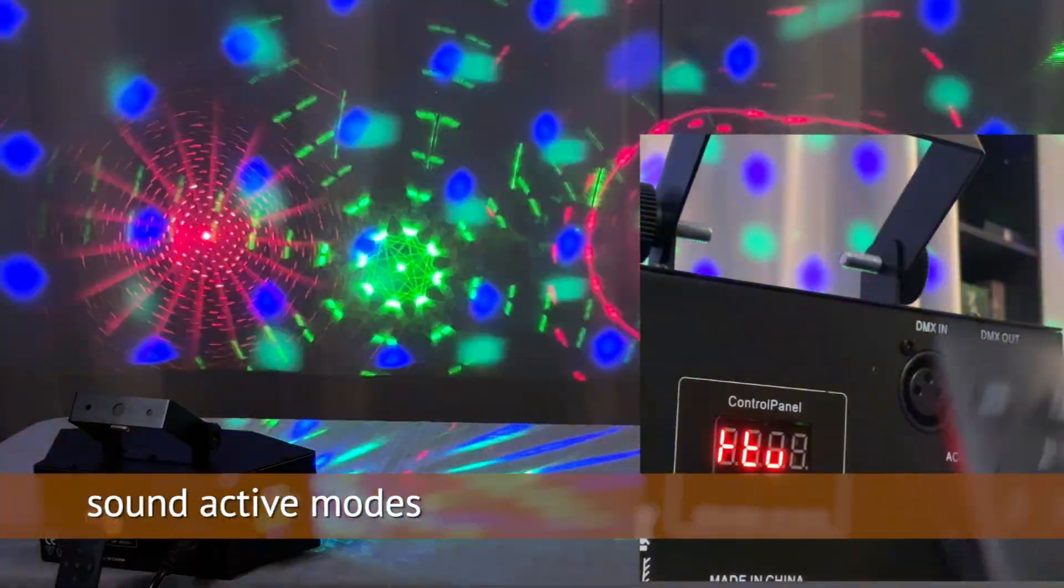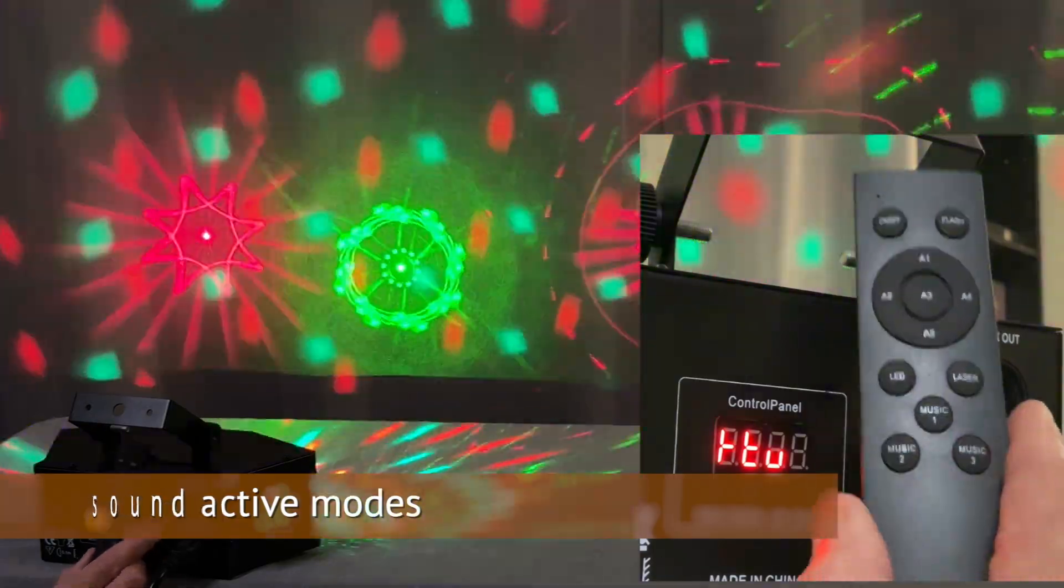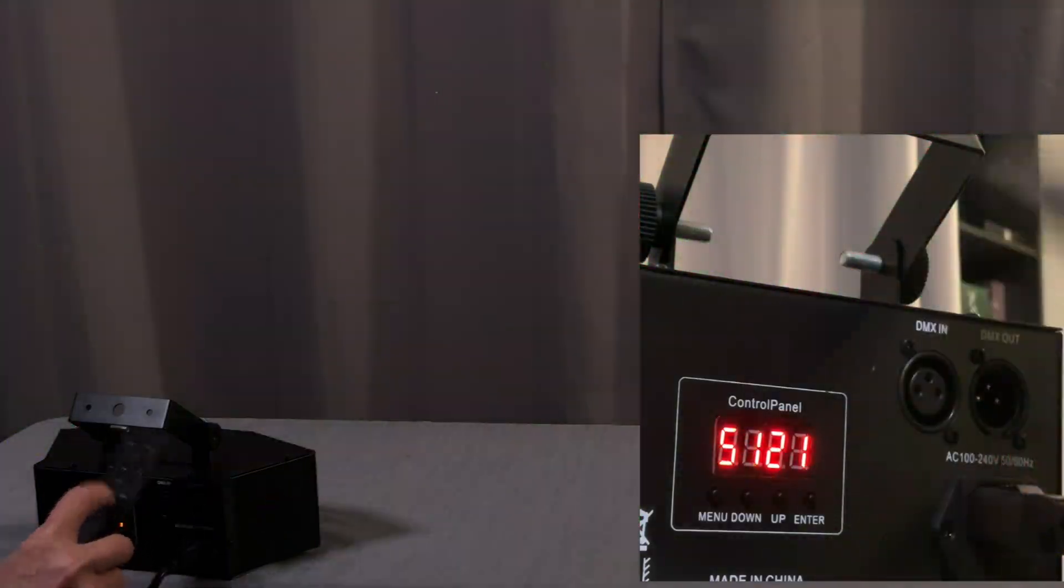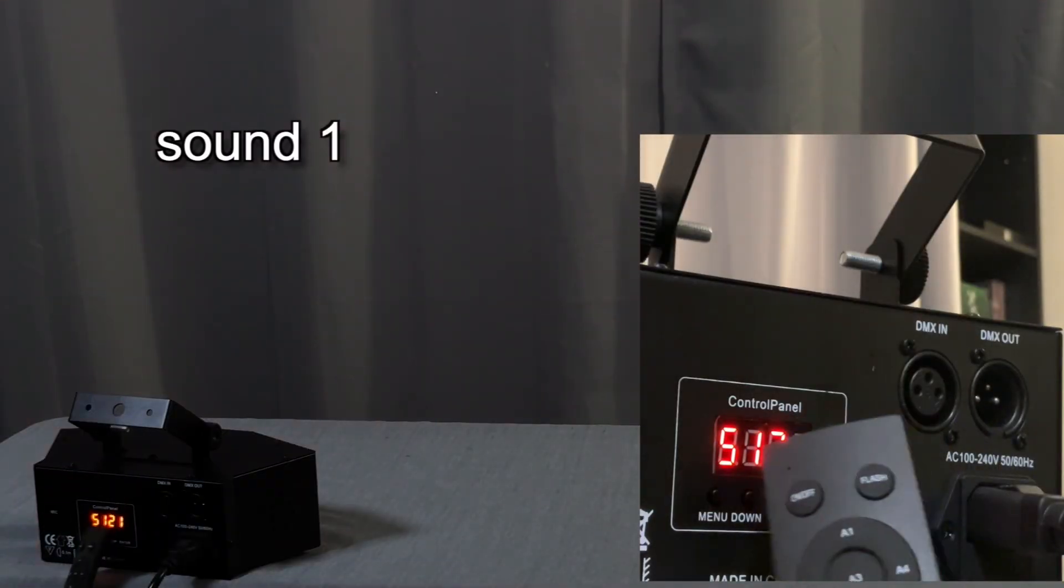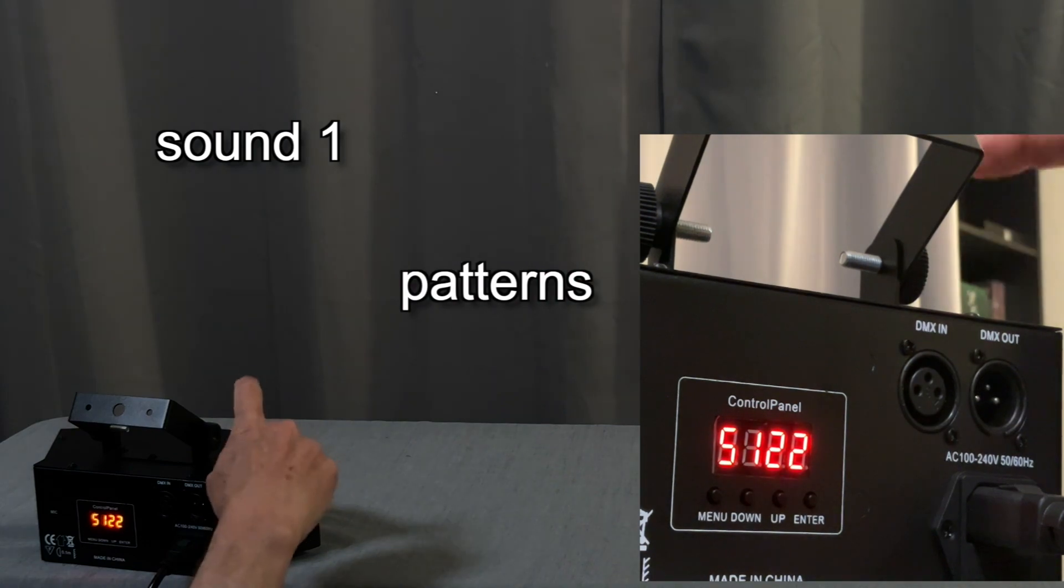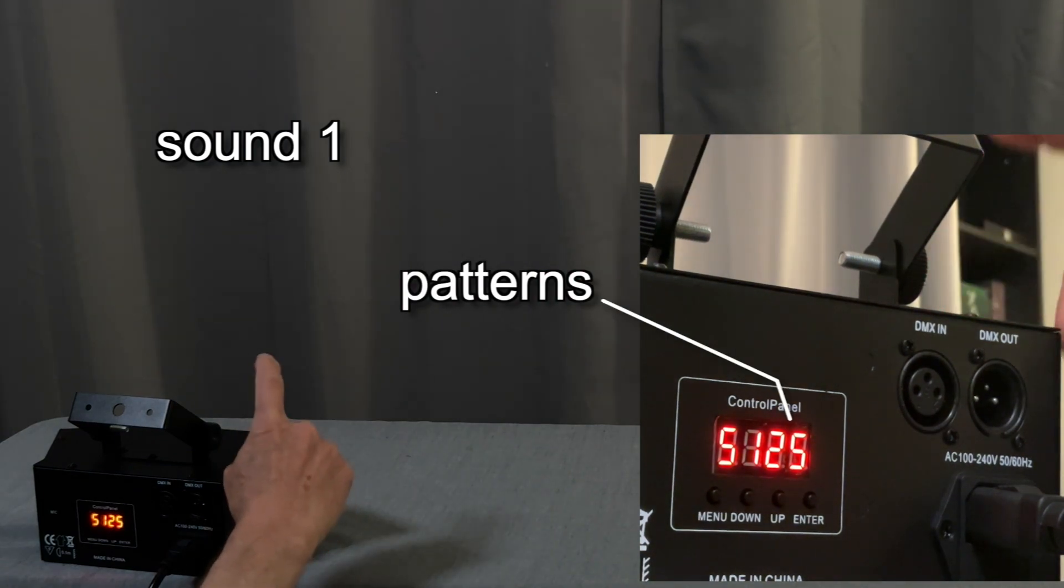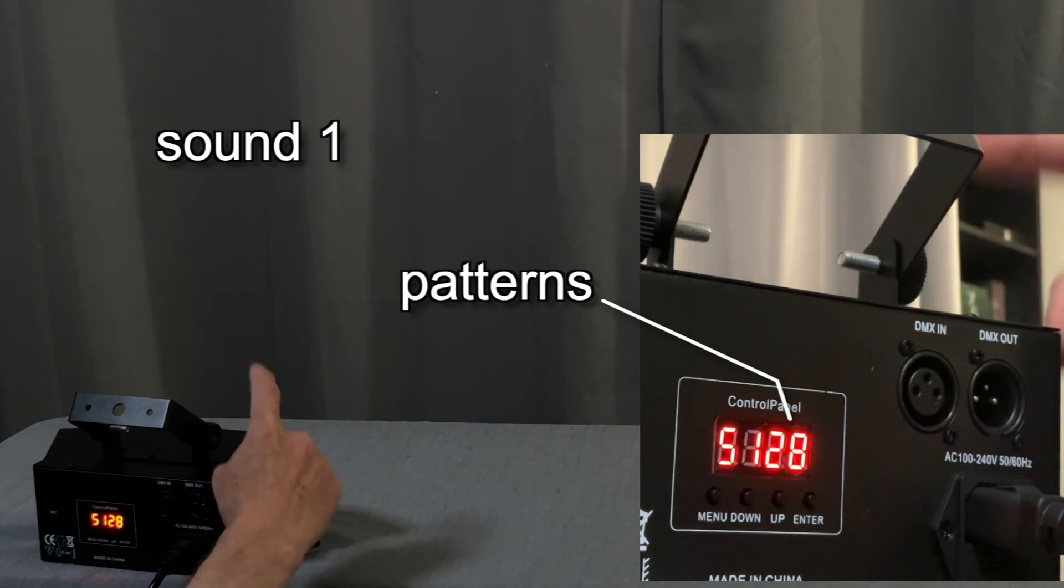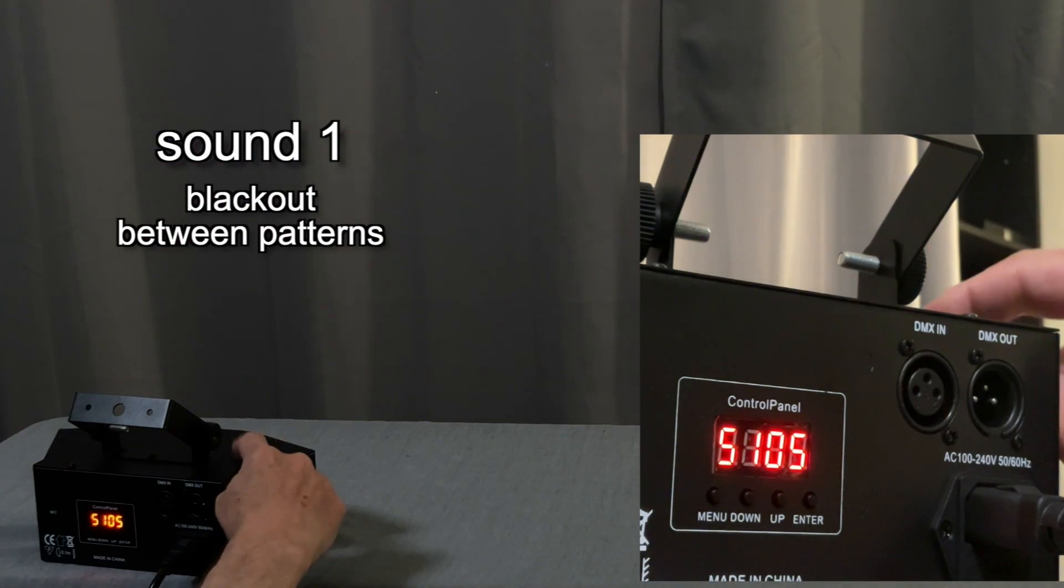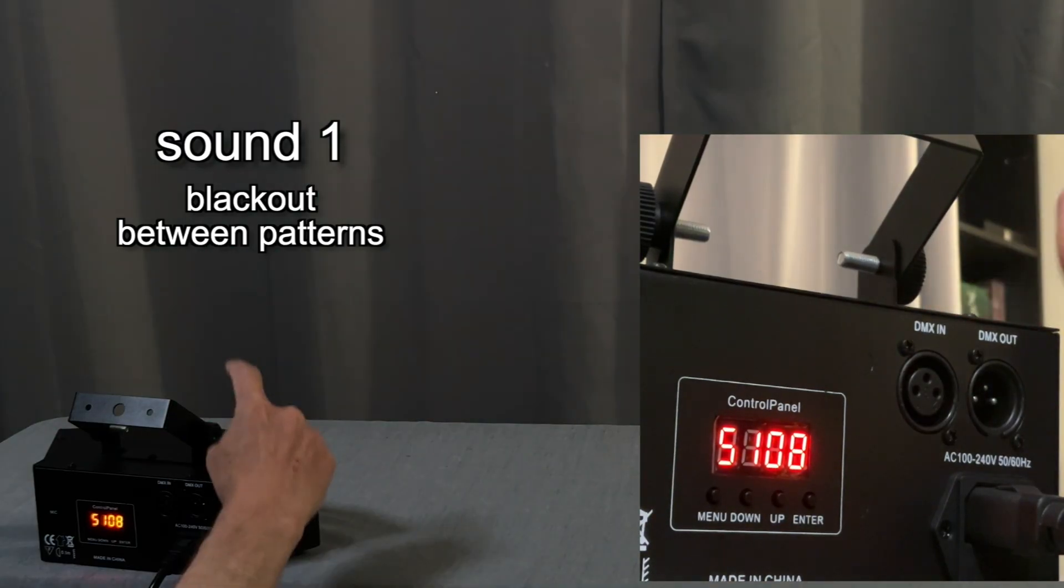Okay let's go to sound active mode and I'm going to access these with the remote control. Sound active one or music one is here. The S one means sound one. And the second two digits are the patterns in the sequence. Each time the microphone hears a transient in the music it advances to the next pattern with the blackout in between.